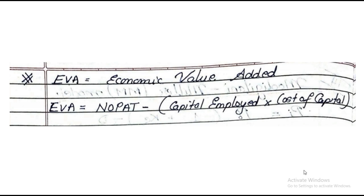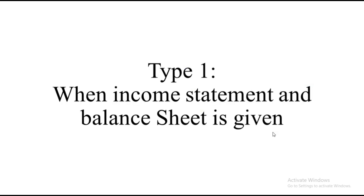Now let us see the very first type of sum. Type 1 is when an income statement and balance sheet is given. Whenever income statement and balance sheet are given, they will ask you to find both EVA and MVA. These are the formulas and steps you need to note down.